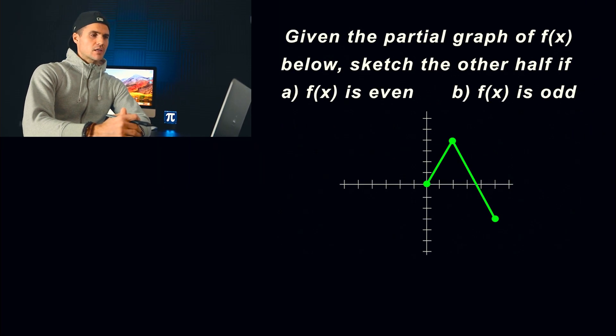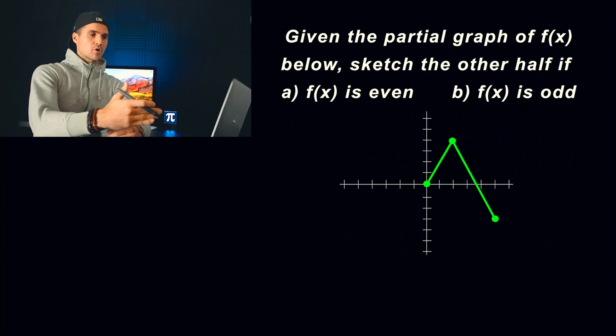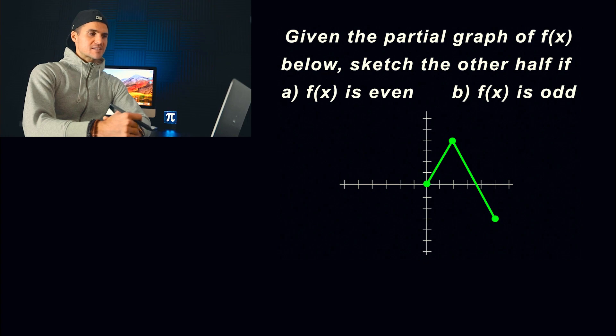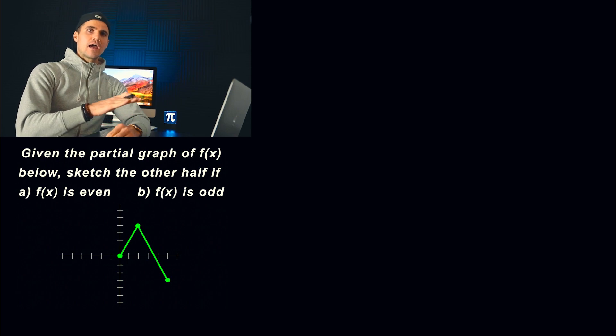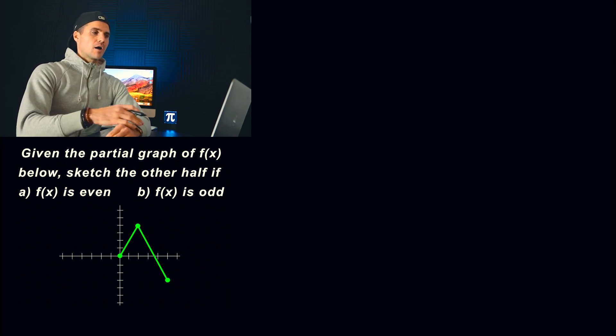Welcome back. Patrick here, moving on to the next example in the Advanced Functions Unit 1 test. We are given this graph here, and we are only given half of it — a partial graph. What we have to do is sketch the other half in two different cases: when the function is going to be even, and when the function is going to be odd.